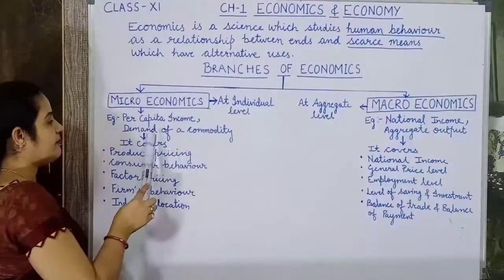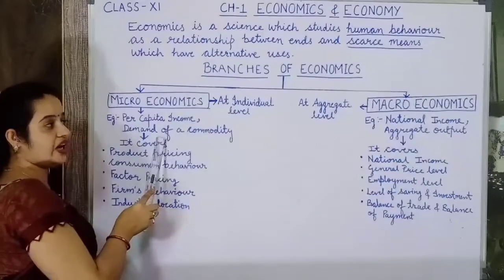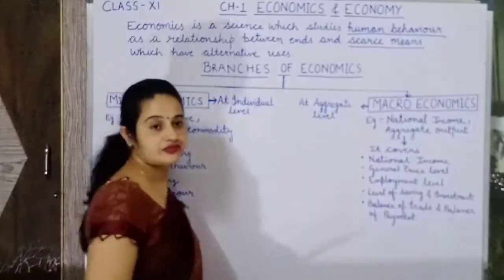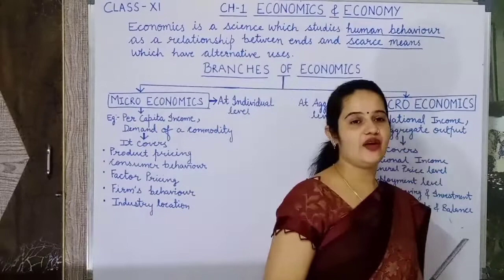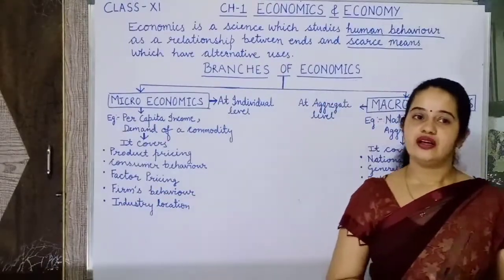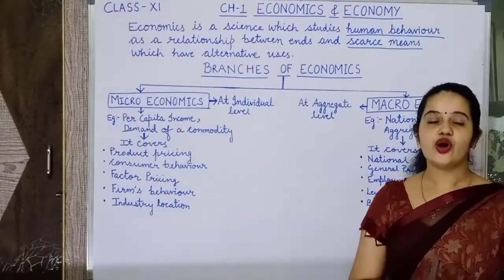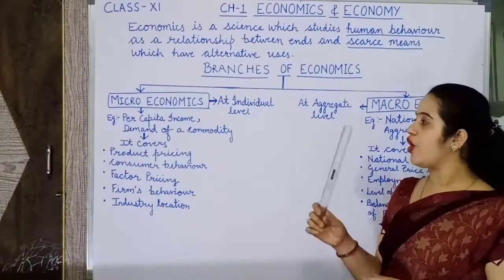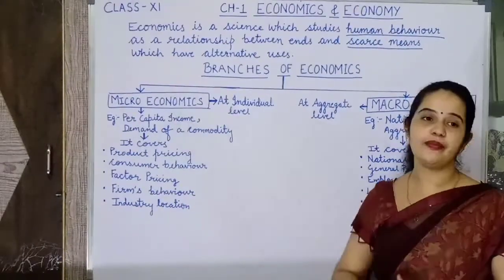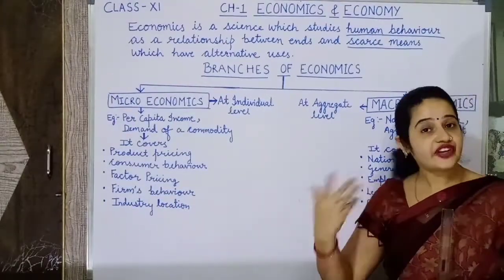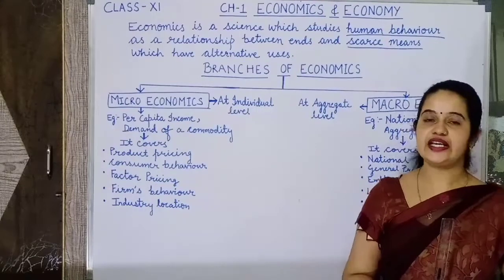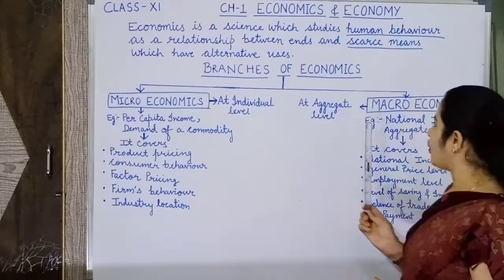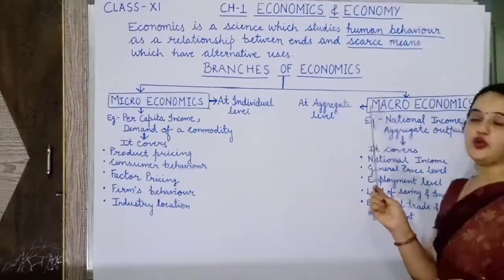The macro counterpart of demand of a commodity is aggregate output. One interesting thing: in the earlier history of economics, economics always dealt with microeconomics. But after the 1930s Great Depression of America, macroeconomics came into existence.